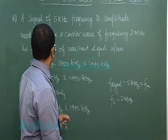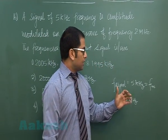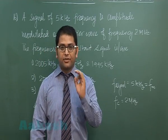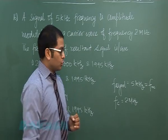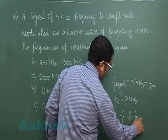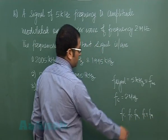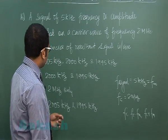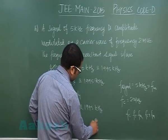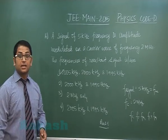The frequencies of the resultant signal form an AM wave, which has three frequency components: F_C, F_C minus F_M, and F_C plus F_M. These represent the carrier frequency, lower sideband, and upper sideband. With this, the correct option is 1. Now let's move to question number 17.